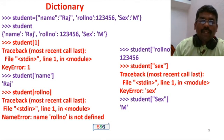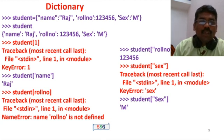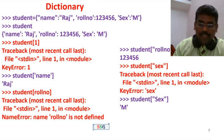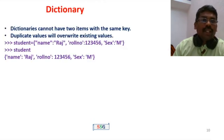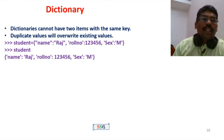Dictionary key-value pairs are accessed by key, and keys are case-sensitive. Next, a dictionary cannot have two items with the same key. If you try to assign one key with two different values, only the last value is kept.